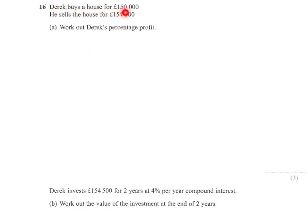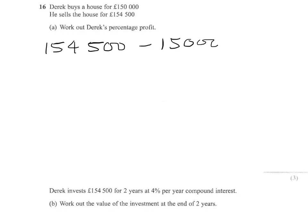Derek buys a house for £150,000 and sells the house for £154,000. Work out Derek's percentage profit. First of all, we need to work out how much profit he's made. So if we do £154,500 subtract £150,000, then we will have the amount of money that he's made. So he's made £4,500 of profit.